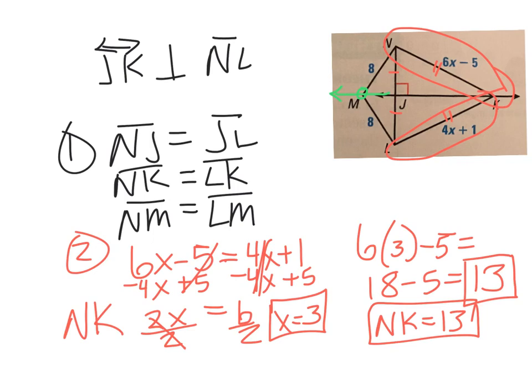Number three: explain why point M is on JK. Because those two measurements are the same, Theorem 5.3, the converse of the perpendicular bisector theorem, proves that M lies on JK.